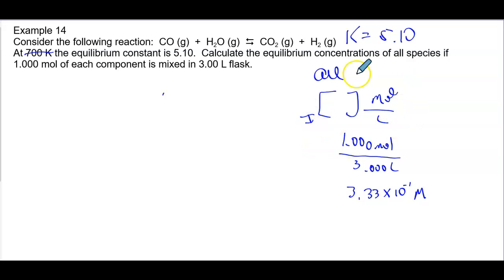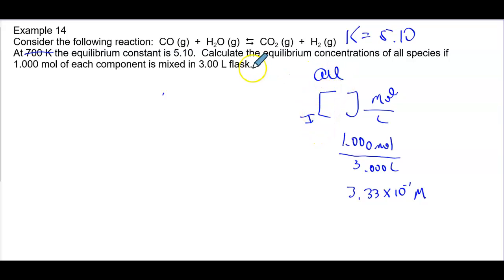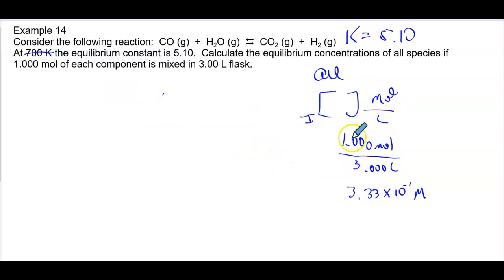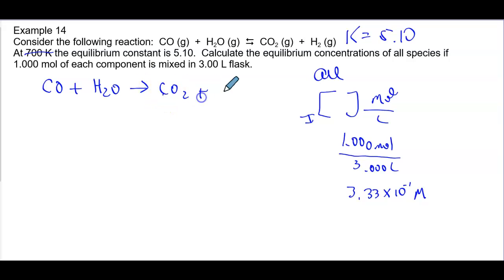These are all initial (I) values. Remember the next step is to ask: is that concentration describing an initial position or an equilibrium position? Based on this word problem, we assume these are initial positions because it tells us to calculate equilibrium concentrations — if we were already at equilibrium, we'd be done. So we know we need an ICE chart. We have CO plus H₂O going to CO₂ plus H₂.